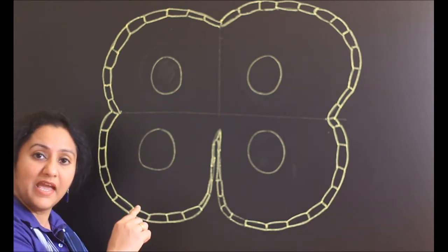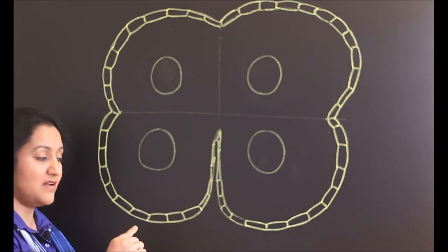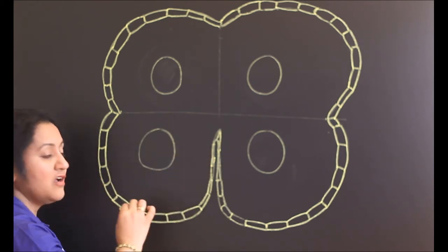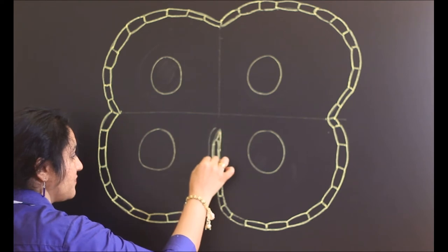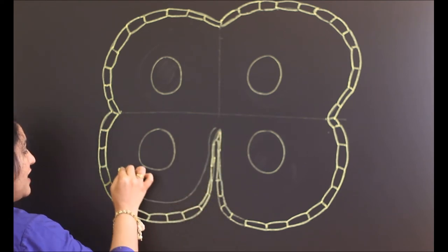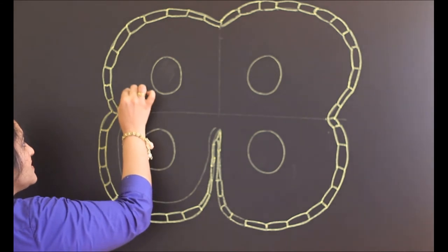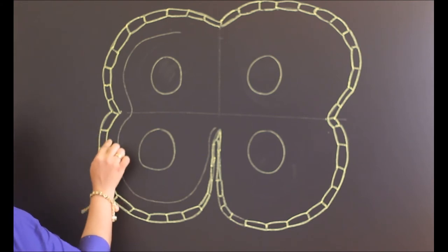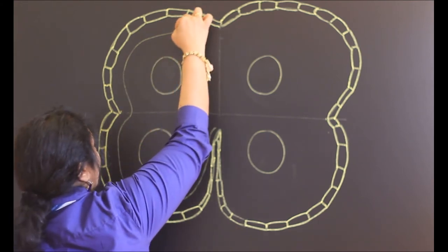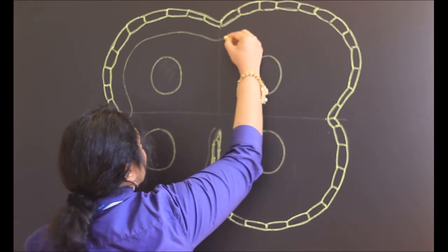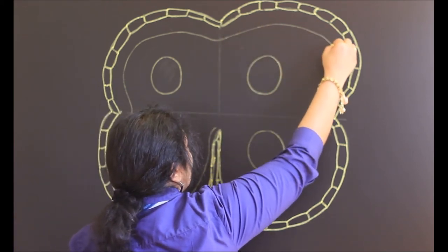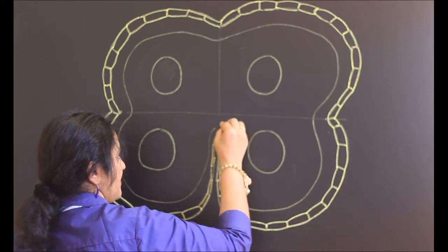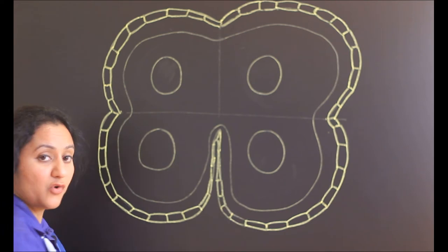Then we need to draw endothecium and three middle layers. Again, draw very fine lines because later you have to erase and draw the cellular nature or structure to it. So now this endothecium layer is a little larger. So when you draw the cells of endothecium, it should be slightly larger. That is why I am putting so much gap between the epidermis and this second layer. The cells are comparatively larger than the epidermal layer. This is for the endothecium layer.